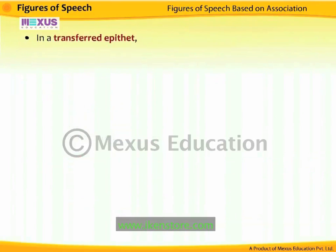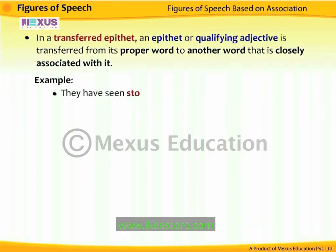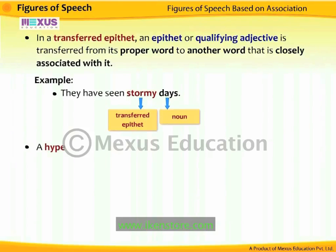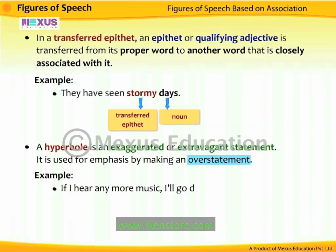In a transferred epithet, an epithet or qualifying adjective is transferred from its proper word to another word closely associated with it. For example, 'they have seen stormy days' — the epithet 'stormy' is actually associated with the experience of the people, but it is transferred to the noun 'days.' A hyperbole is an exaggerated or extravagant statement used for emphasis by making an overstatement. For example, 'if I hear any more music, I'll go deaf' — the speaker will not really turn deaf; this is an exaggeration.